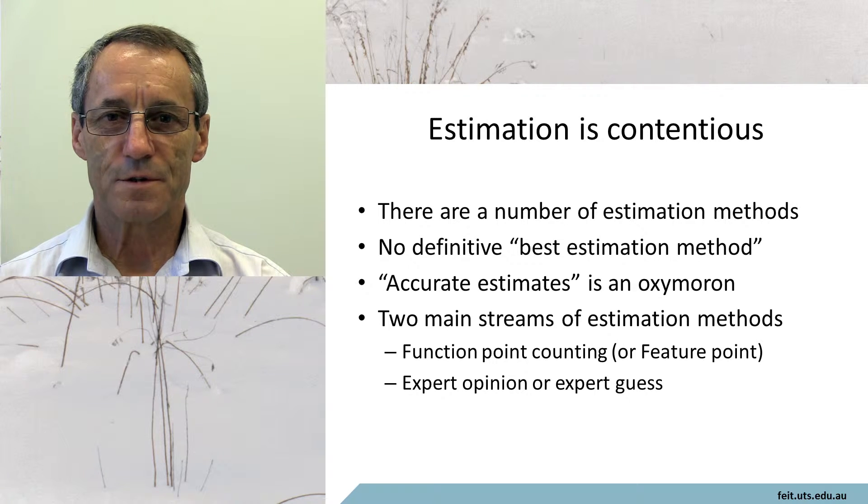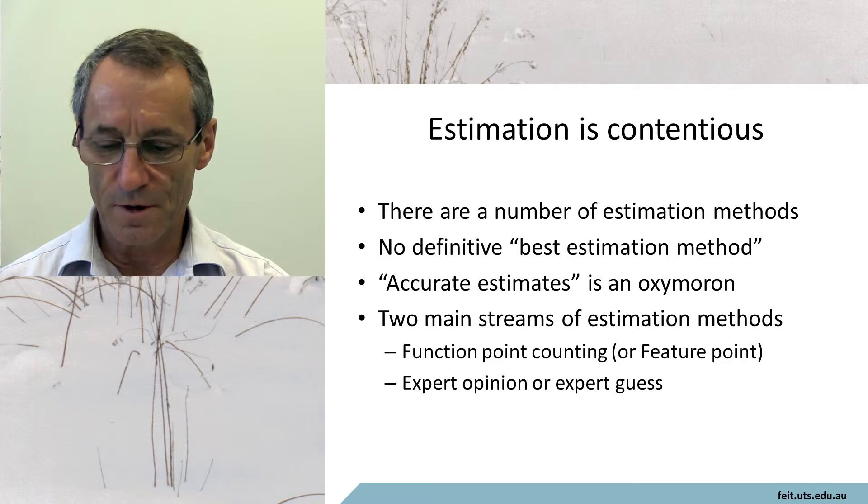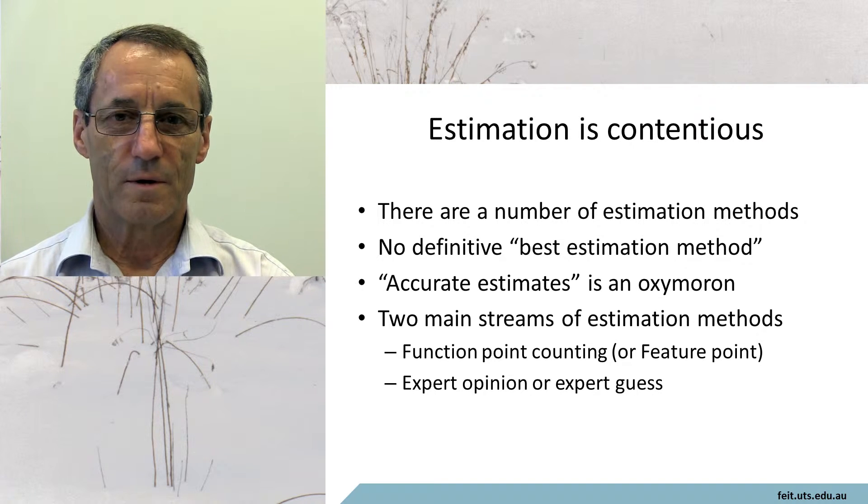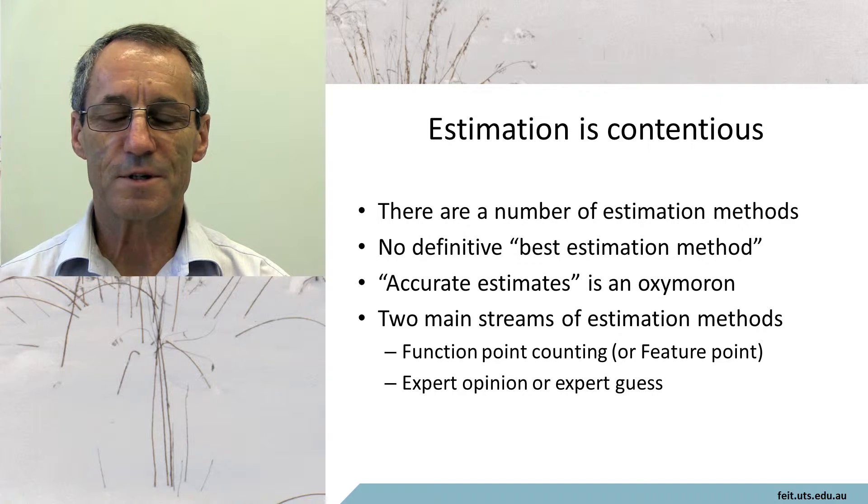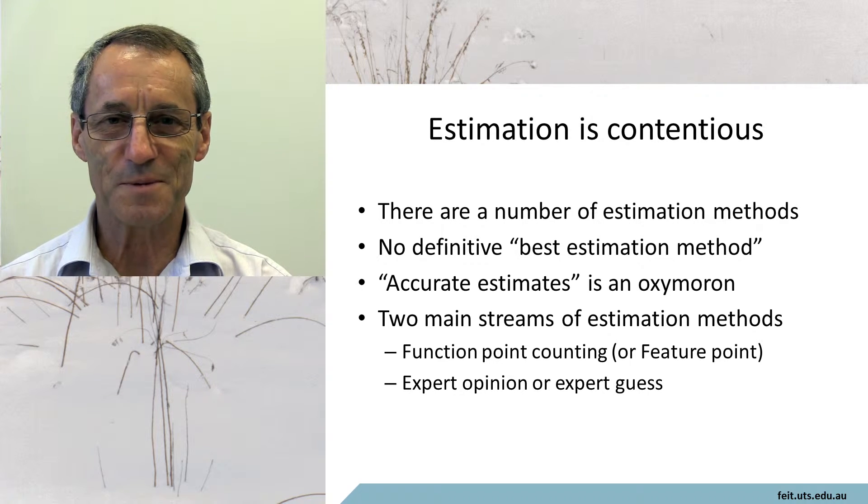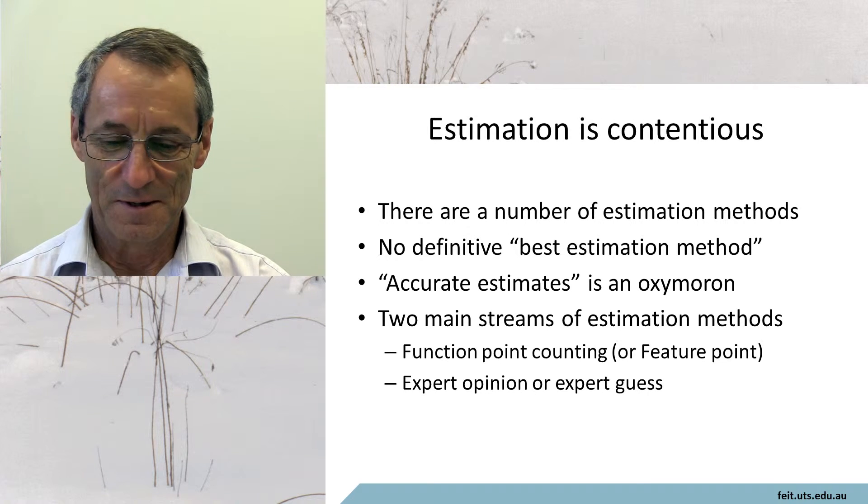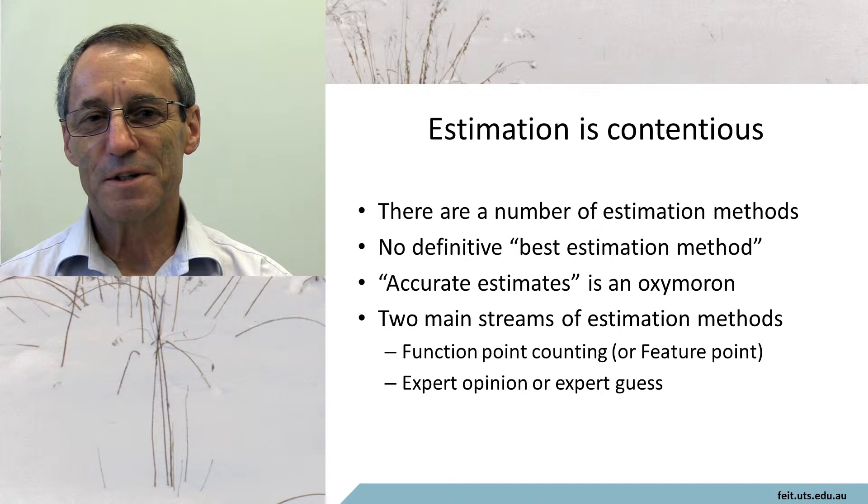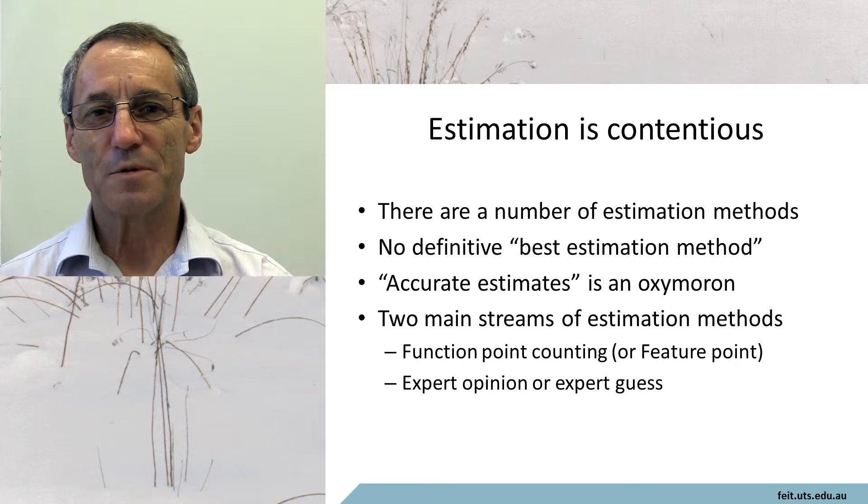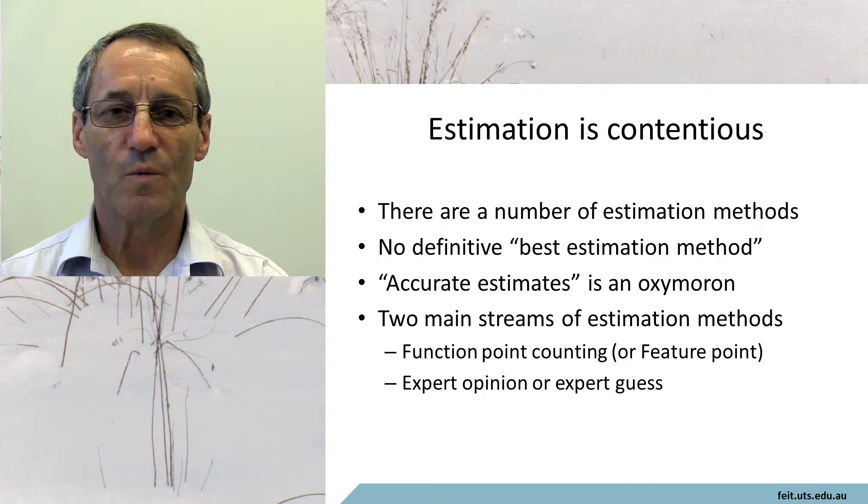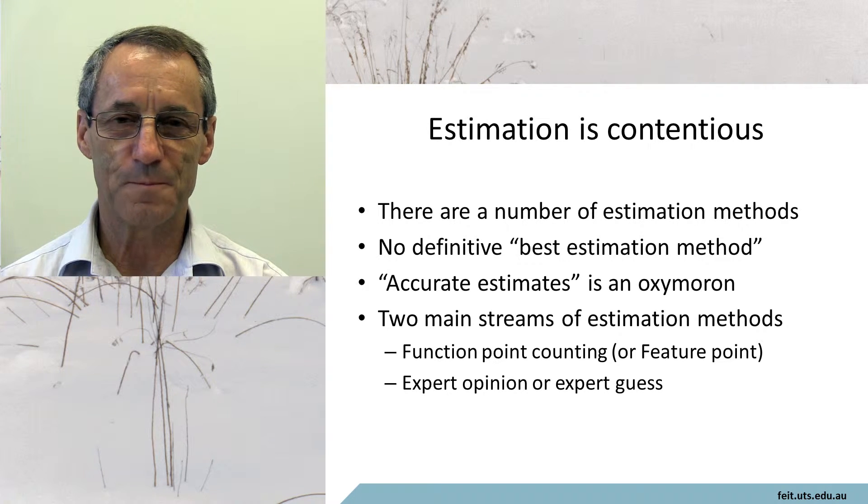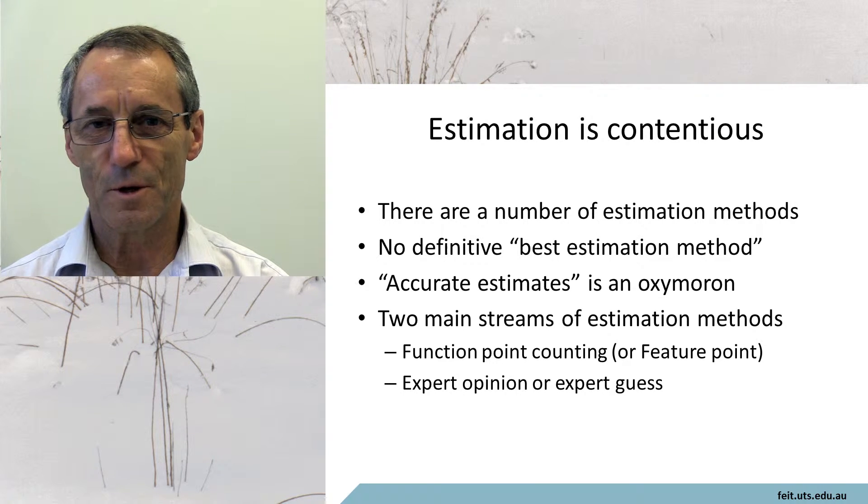There isn't a definitive answer to good estimation and there's no answer to how do you get accurate estimates. They're estimates. They're called estimates for a good reason. They are estimates. Now there are two largely opposing schools of thought. One school of thought is the function point counting method of estimating the job.